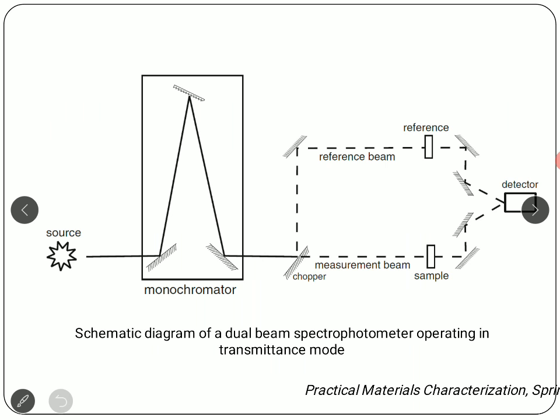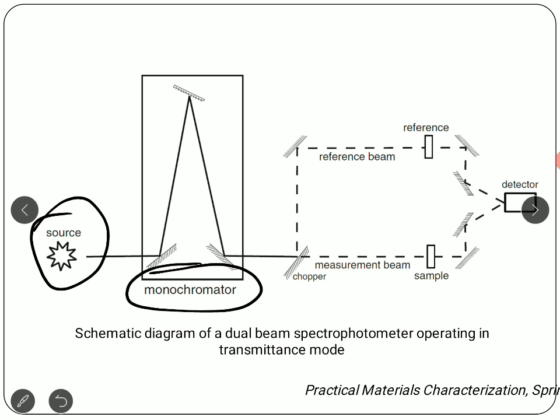Continuing, we will now discuss the instrumentation part. A spectrophotometer generally has a source, followed by a monochromator which separates out wavelengths. If we want UV radiation of a particular wavelength incident on a sample, we use a monochromator, which may be a combination of a grating and mirror. The mirror reflects the beam, the grating separates the wavelengths, and the light travels further.